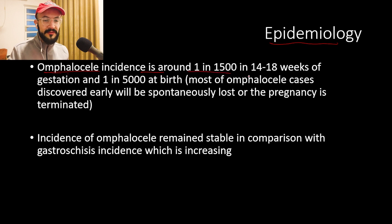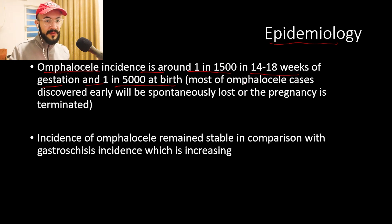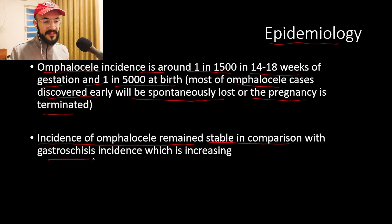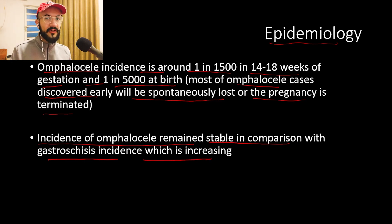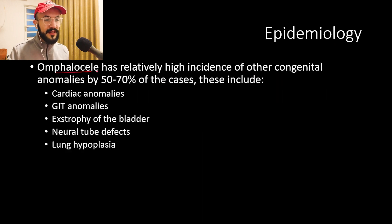Moving on to the epidemiology: the omphalocele incidence is around 1 in 1,500 at 14 to 18 weeks of gestation and 1 in 5,000 at birth. The difference in incidence between 14–18 weeks and birth occurs because omphalocele cases discovered early will be spontaneously lost or the pregnancy is terminated. Omphalocele incidence has remained stable, in comparison to gastroschisis, which is increasing to around 1 in 2,500 births.